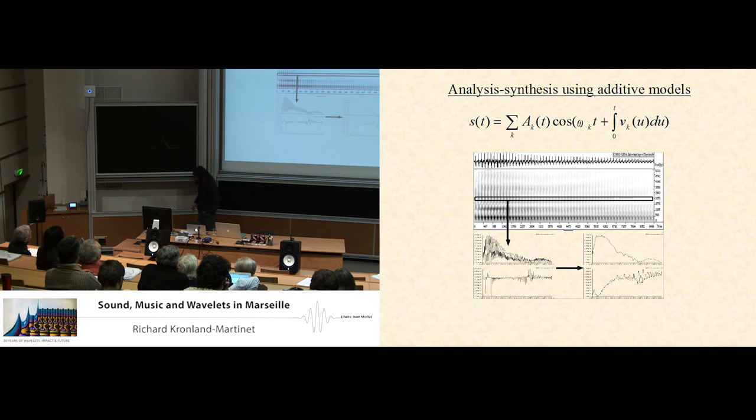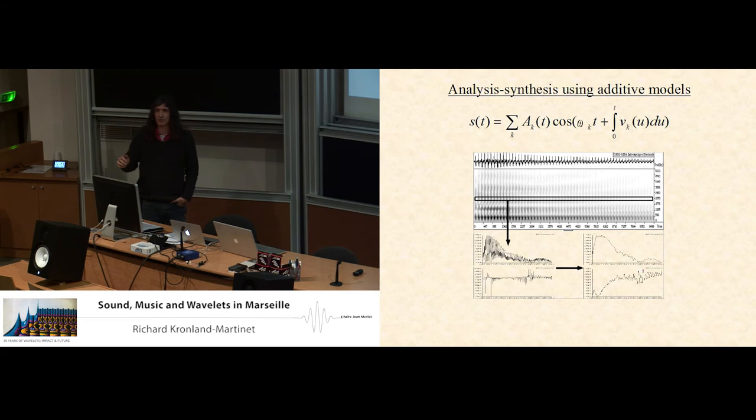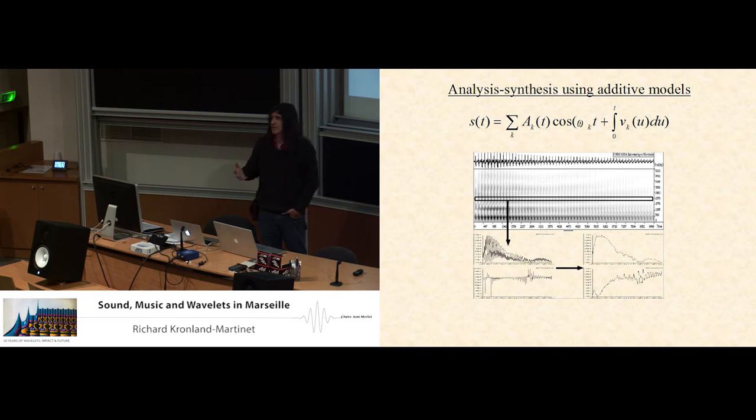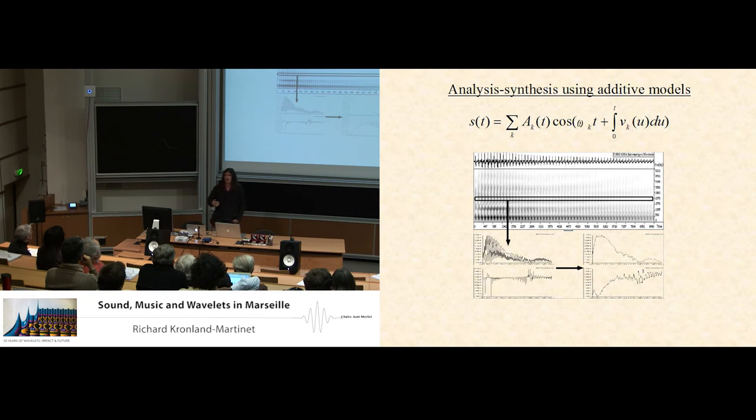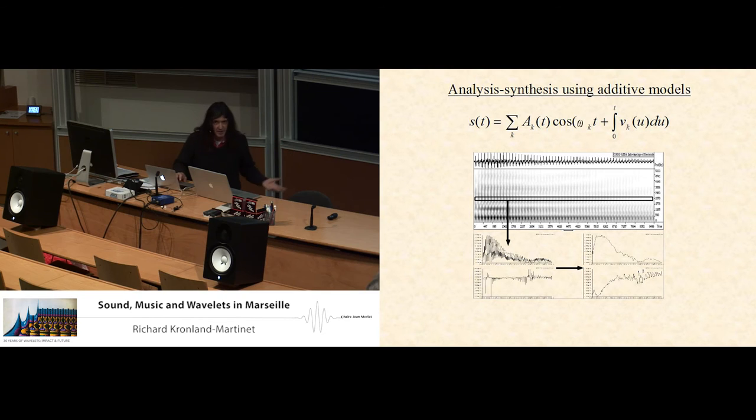So one could think that by looking at the restriction of a wavelet transform for a fixed value of the dilation parameter, we could get an estimation of the amplitude and frequency modulation law. But this is not true. What we get is a very poor estimation of this law. And this is because the wavelet transform doesn't aim at separating the component. So how to go from this poor representation estimation to this nice one? So we developed a lot of techniques for that. So I don't have a lot of time.